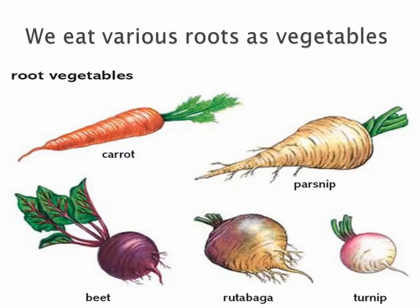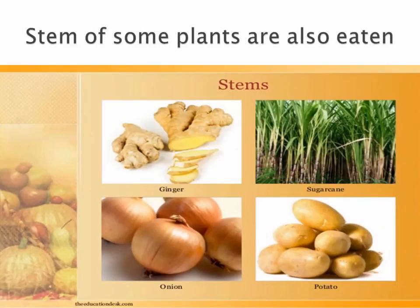Let us learn about the vegetables which are actually roots. Vegetables like carrot, radish, turnip, and beet are actually roots that we eat. Stem of some plants are also eaten. Did you all know that potatoes are the stem of a potato plant and not roots? They are stems that grow under the ground. Ginger is also the stem of the ginger plant.